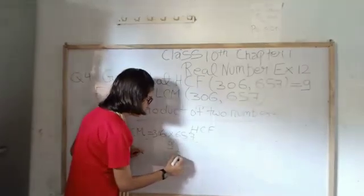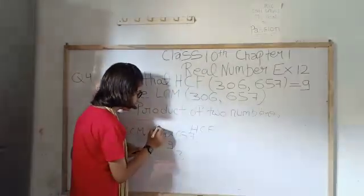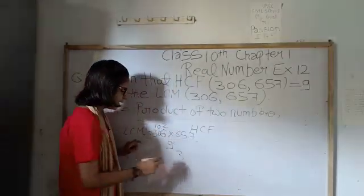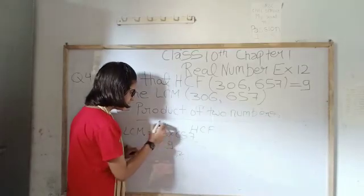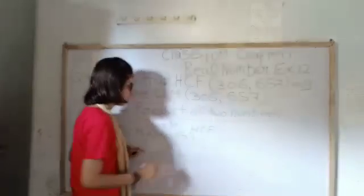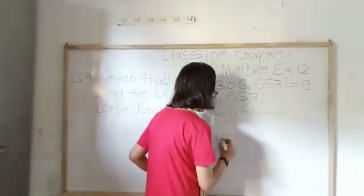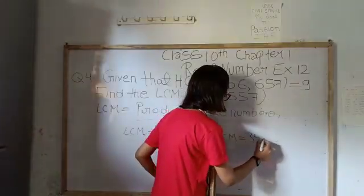So now let us try to cancel. Three threes are 9, three ones are 3, 0, and 2. Now once again it can be cancelled. Three threes are 9 and three fours are 12. So what we got, that LCM equals to 34 into 657.